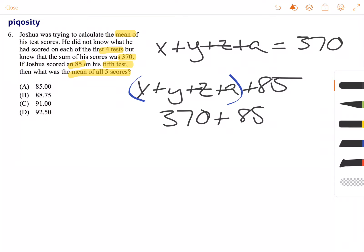Now to find the mean of something you take the sum of all the figures and then divide by the number of figures that were added up to find that sum. So we had a total of five values because this was his fifth test.